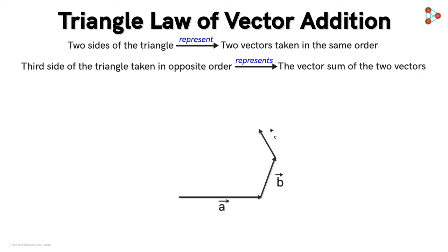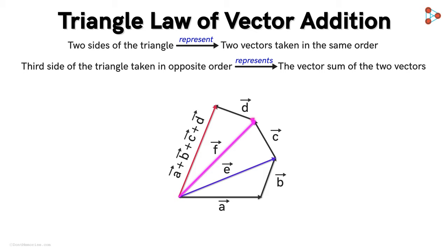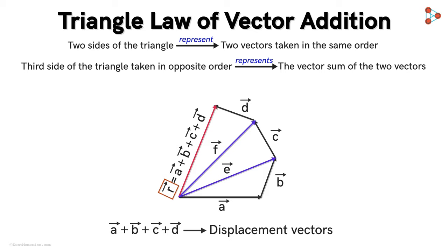Now suppose instead of two vectors, we want to add these four vectors. What will the vector sum be? Can you apply this law here? It will be the vector whose initial point is the initial point of vector A and whose terminal point is the terminal point of vector D. Suppose first we add vectors A and B to get vector E. Then we add vector E with the third vector C to get vector F. Finally, adding vector F with the fourth vector D gives us the resultant vector R. If we think of these as displacement vectors, it is easy to see that vector R will be the final resultant vector of these four vectors.